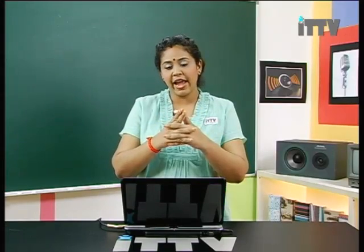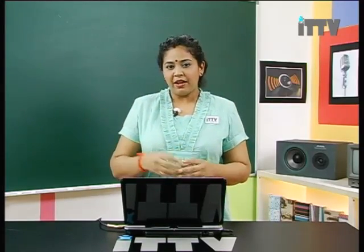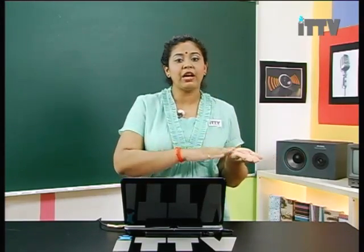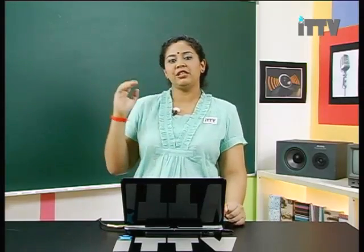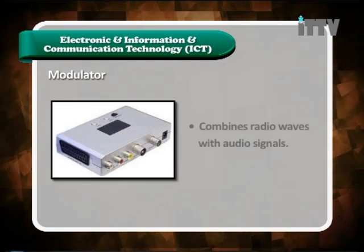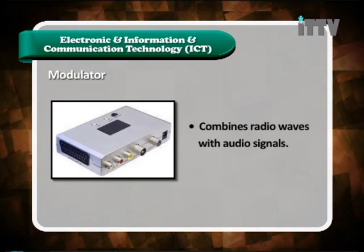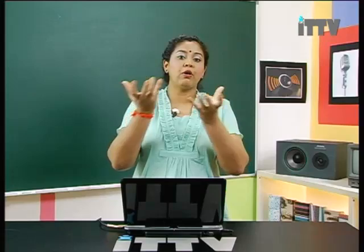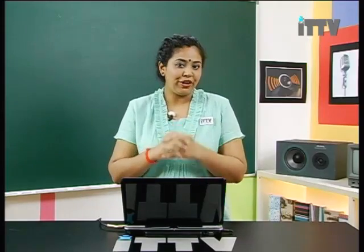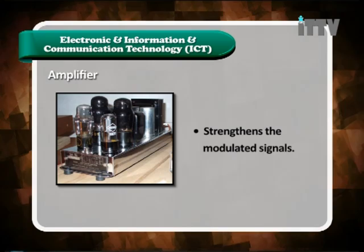Whatever I'm speaking is a type of sound wave. The sound wave that travels through the air will be picked up by the microphone. The function of the microphone is to convert the sound wave into an audio signal — an electrical signal that is transmitted through electrical wires. The modulator combines radio waves with the audio signal. The audio signal from the microphone is combined with radio waves through a process called modulation, performed by the modulator. The amplifier then strengthens the modulated signals.